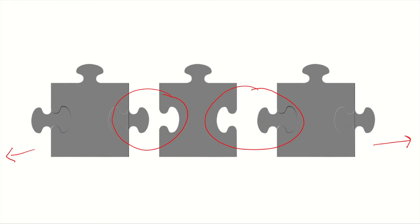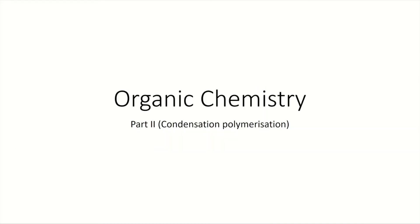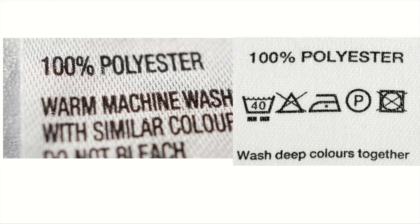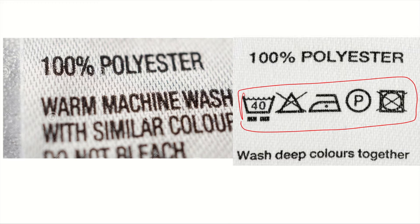This leads to the next type of polymerization, which we call condensation. Polyester is found in most synthetic clothing — if you look at the shirt label it often says 100% polyester. These laundry icons tell you how to care for the fabric: for polyester, do not use bleach, do not tumble dry.